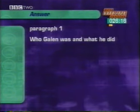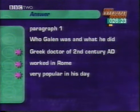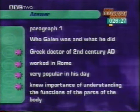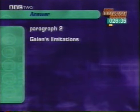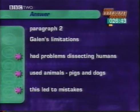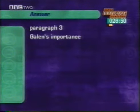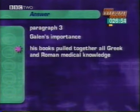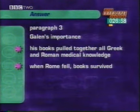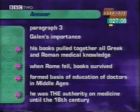Here are the main points and a suggestion for a plan. The first paragraph should deal with who Galen was and what he did — a Greek doctor of the 2nd century AD who worked in Rome, was very popular, and knew the importance of understanding the skeleton and functions of the body. The second paragraph should look at Galen's limitations — problems dissecting humans meant he used animals such as pigs and dogs, leading to some mistakes. The third paragraph should deal with Galen's importance: his writings were important for 1,400 years, pulling together everything known from the Greek and Roman world. When Rome fell, some of his books survived, forming the basis of doctors' education in the Middle Ages. He was the great unquestioned authority — mistakes and all — until the 16th century.